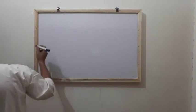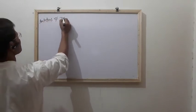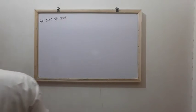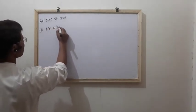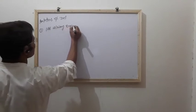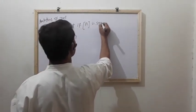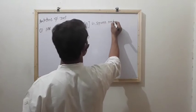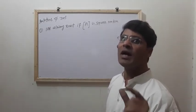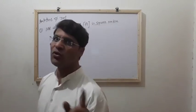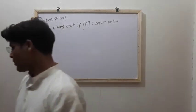Properties of determinants. Property 1: The determinant always exists if matrix A is a square matrix, meaning we can calculate the determinant of any square matrix. If the given matrix is not a square matrix, we cannot calculate its determinant.